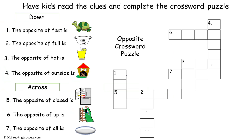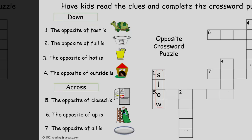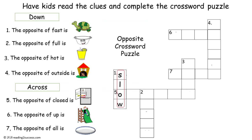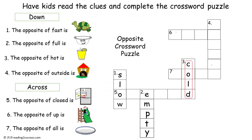Kids love to do crossword puzzles, and they are a great way to practice antonyms. So we are going to have them complete this opposite crossword puzzle. One down, the opposite of fast, is slow. Two down, the opposite of full, is empty. Three down, the opposite of hot, is cold. And four down, the opposite of outside, is inside.